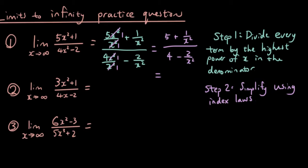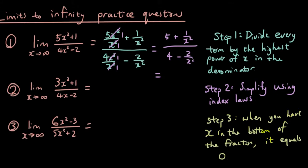And now we're going to go on to step 3. Step 3 is, when you have x in the bottom of the fraction, it equals 0. So what does that mean? Well, let's look for terms where x is in the bottom of the fraction. This one has an x in the bottom of the fraction, and this one has an x in the bottom of the fraction.